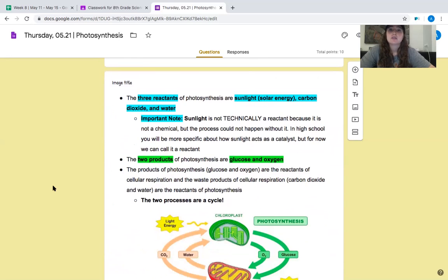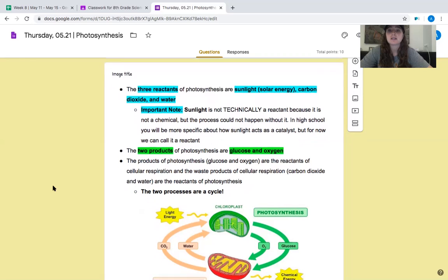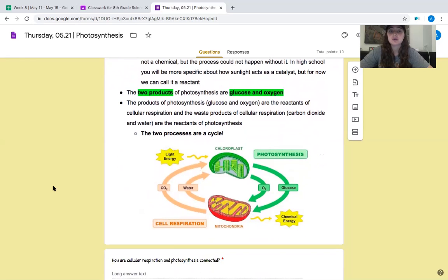The three reactants of photosynthesis are sunlight or solar energy, carbon dioxide, and water. Important note, sunlight is not technically a reactant because it is not a chemical, but the process could not happen without it. In high school, you'll be more specific about how sunlight acts as a catalyst, but for now, we'll call it a reactant. The two products of photosynthesis are glucose and oxygen. The products of photosynthesis, glucose and oxygen, are the reactants of cellular respiration, and the waste products of cellular respiration, carbon dioxide and water, are the reactants of photosynthesis. So the two processes are a cycle, and this image shows that here.